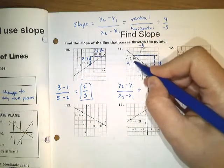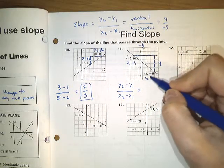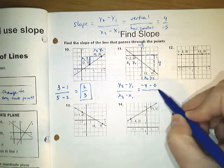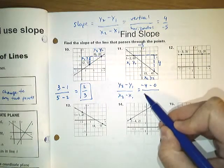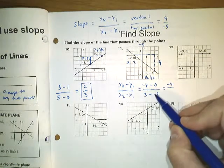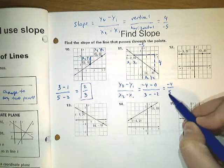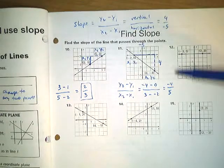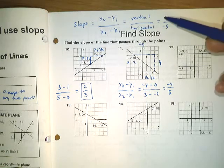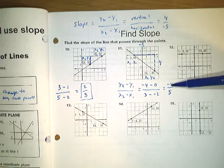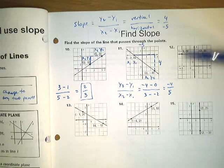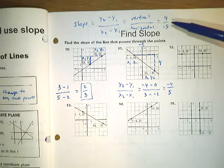If I call this x sub 1, y sub 1 and this x sub 2, y sub 2, I'd start with negative 4 minus 0 over 3 minus negative 2. That would be negative 4 over positive 5. So is negative 4/5 the same? Yes. You can put the negative sign anywhere you want — in the top, in the middle, or in the bottom. They're all the same fraction: negative 4/5.